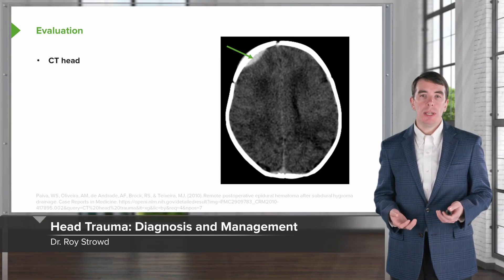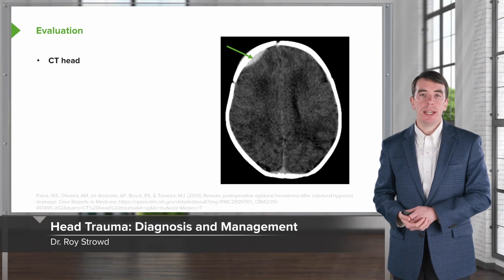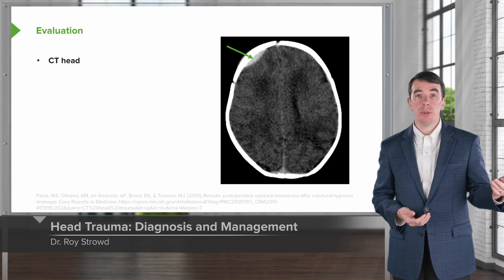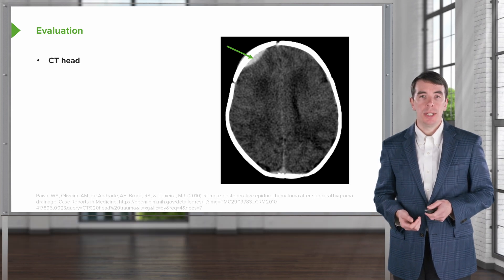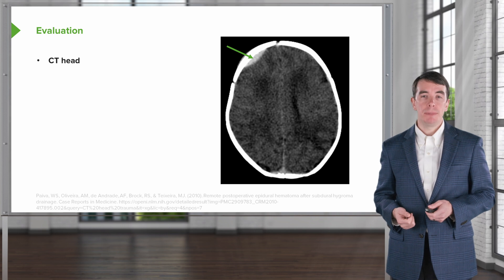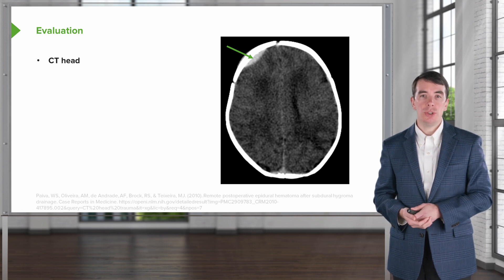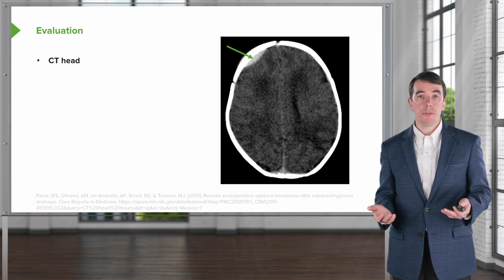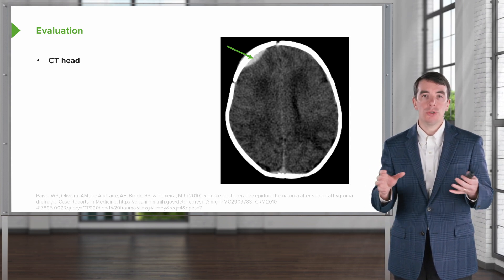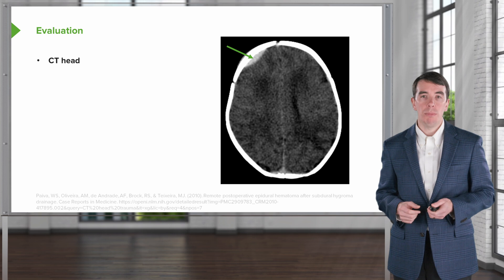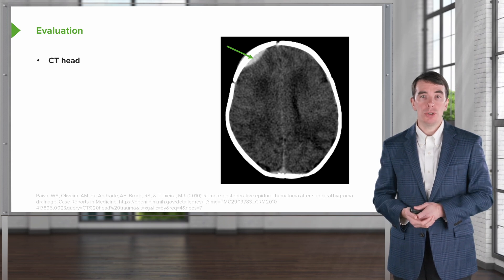What about the evaluation of these patients? How do we diagnose and work up both the injury and potential secondary complications? Well, the first thing that should be done is a non-contrast head CT, which is the initial imaging modality of choice. We're looking for skull fractures, secondary injuries in the scalp, and intracranial hemorrhages.